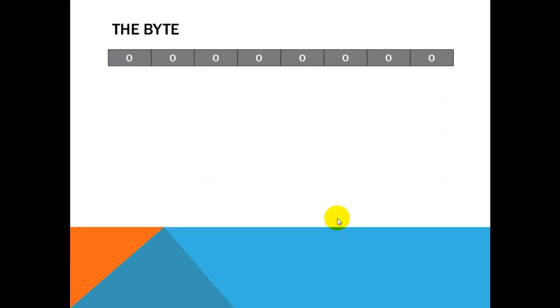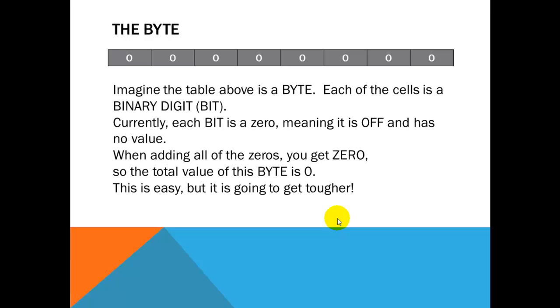Now, imagine that we have here the byte. You will notice there are 8 different locations. Each of the cells is going to be a location. So, if we start at the right, 1, 2, 3, 4, 5, 6, 7, 8. Alright, all of these are zeros, meaning they're all off. So, if we added all of these up, we get a zero. So, the total value of this byte is zero. So, this is pretty simple, but it's going to get a lot tougher as we go along.